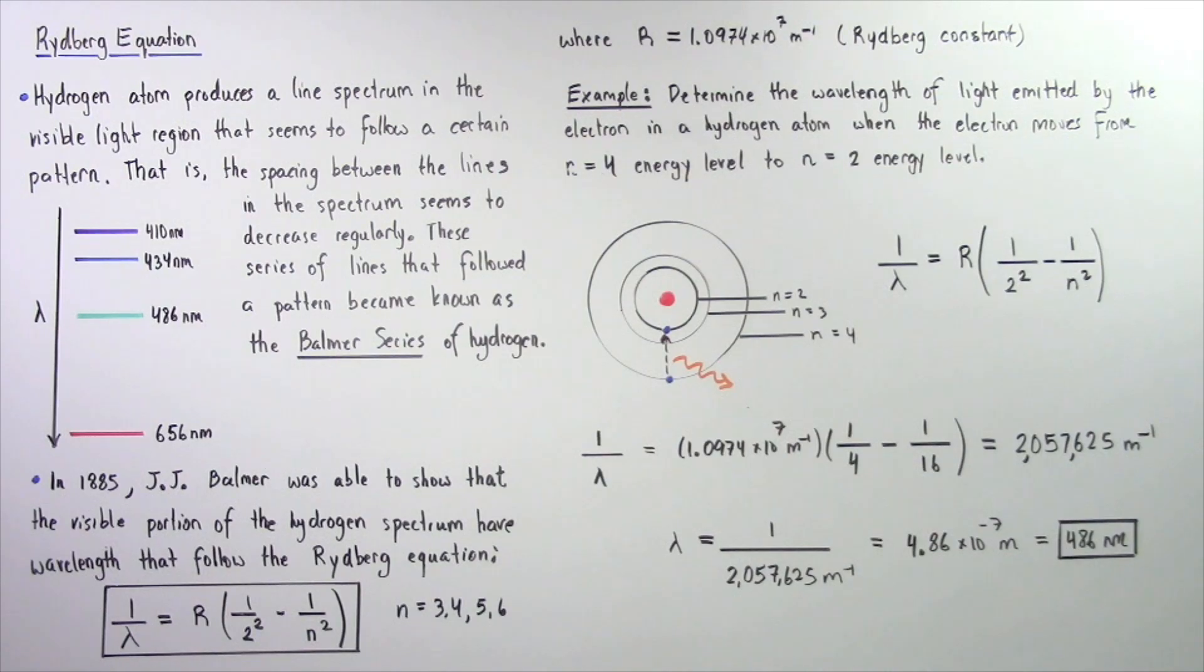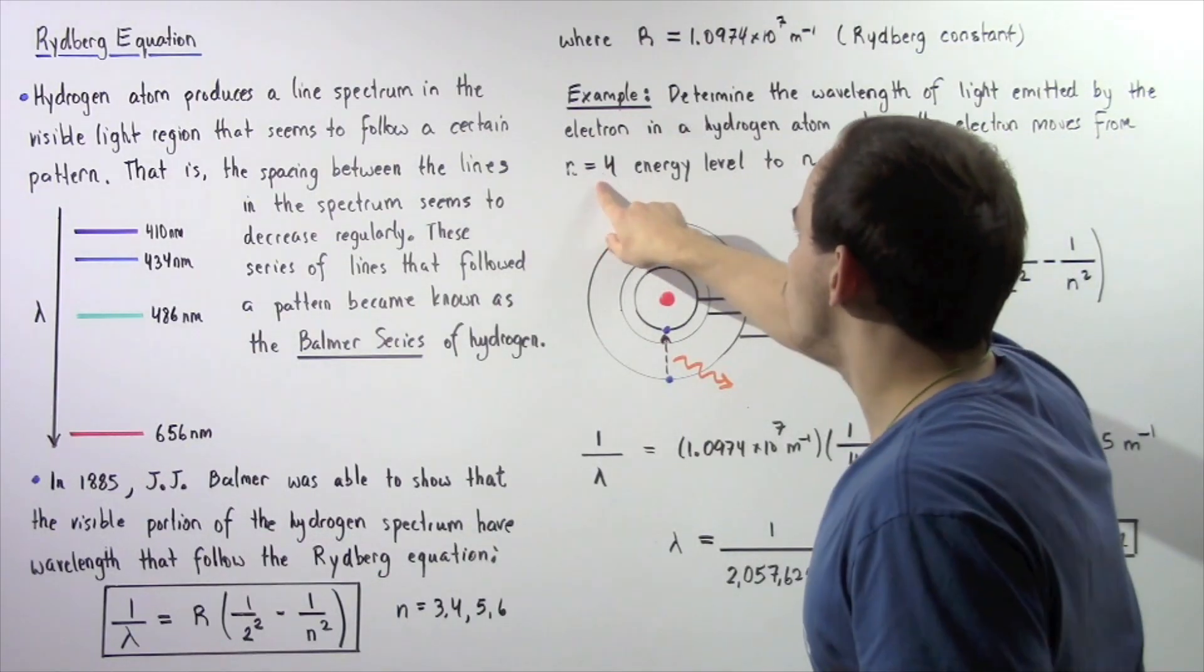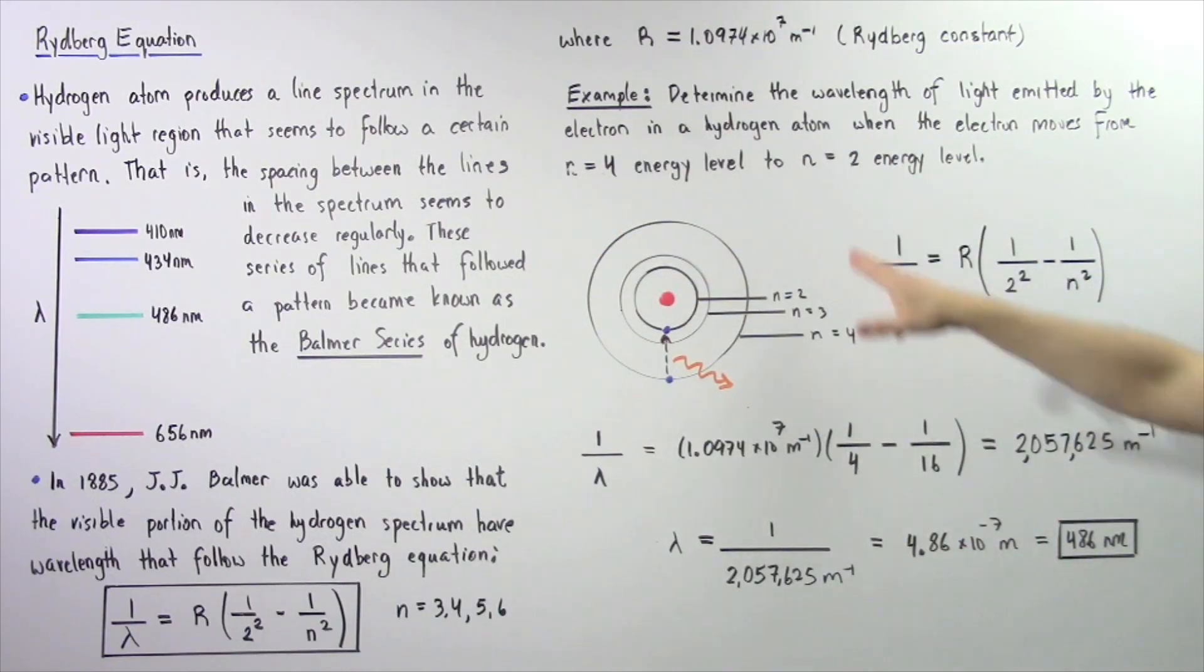let's look at the following example. So we want to determine the wavelength of light emitted by the electron in a hydrogen atom when the electron moves from n equals 4 energy level to n equals 2 energy level.